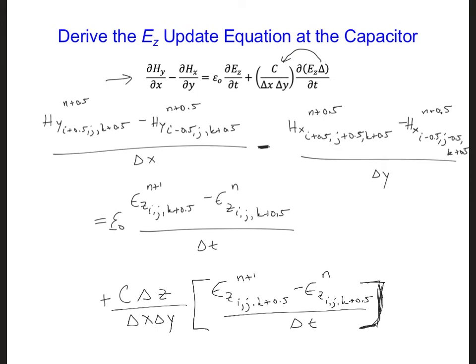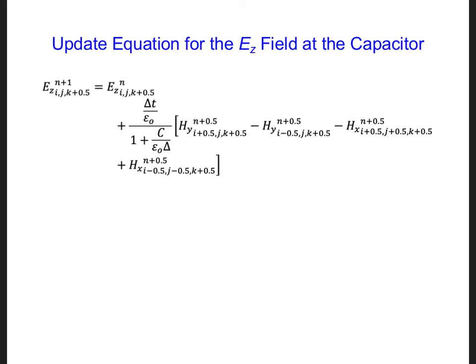So this is what we get after we apply central differencing. You can see here that there are two future Ez terms, one right here and one right here. So we would need to combine these two terms and move them both to the left side so we could solve for the future Ez value. And then we'd have to move all the other terms to the right side. This is straightforward but a bit tedious, so I'm just going to show the final result.